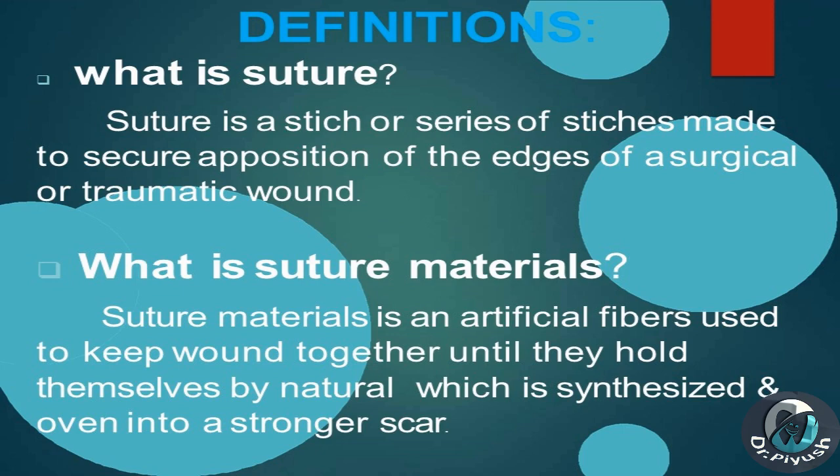Definitions. A suture is a stitch or series of stitches made to secure apposition of the edges of a surgical or traumatic wound. Suture materials are artificial fibers used to keep a wound together until they hold themselves by natural healing, which is synthesized and woven into a stronger scar.